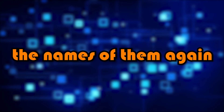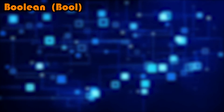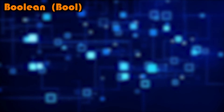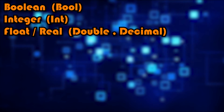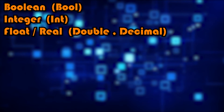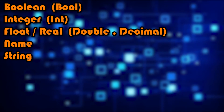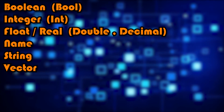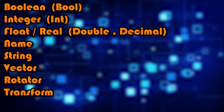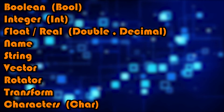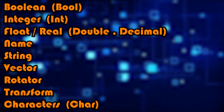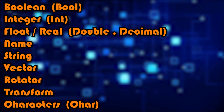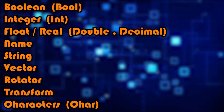So to recap the names: we have Boolean (sometimes called Bool or Bool), Integer (sometimes called Int), Float or Real (also called Double or Decimal), Name, String, Vector, Rotator, Transform, and Character (sometimes called Char). Different people will pronounce 'char' in different ways.